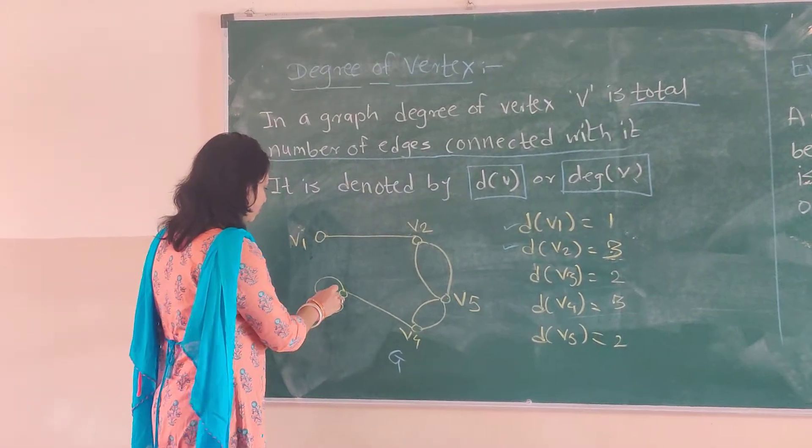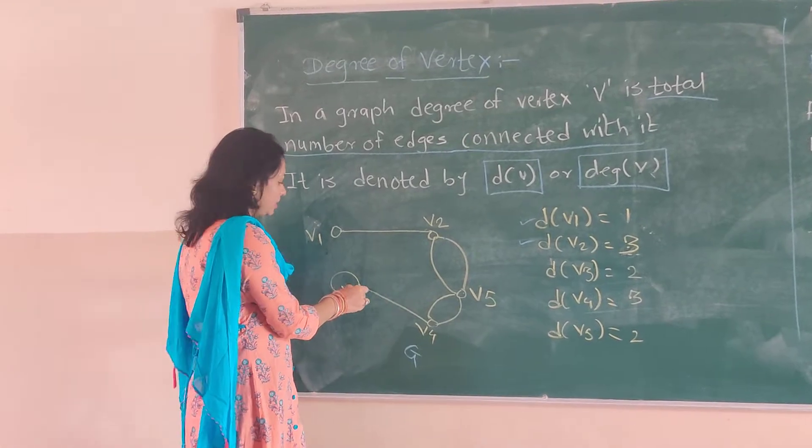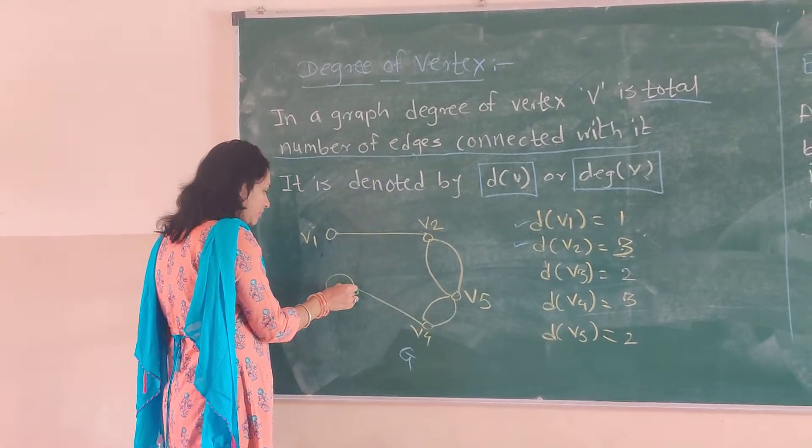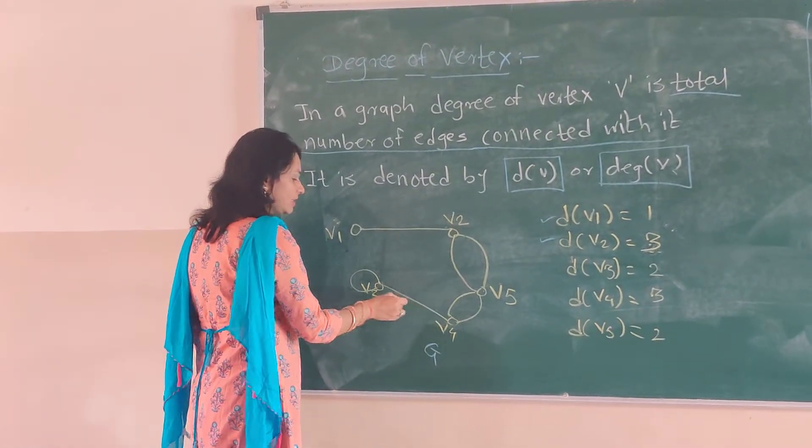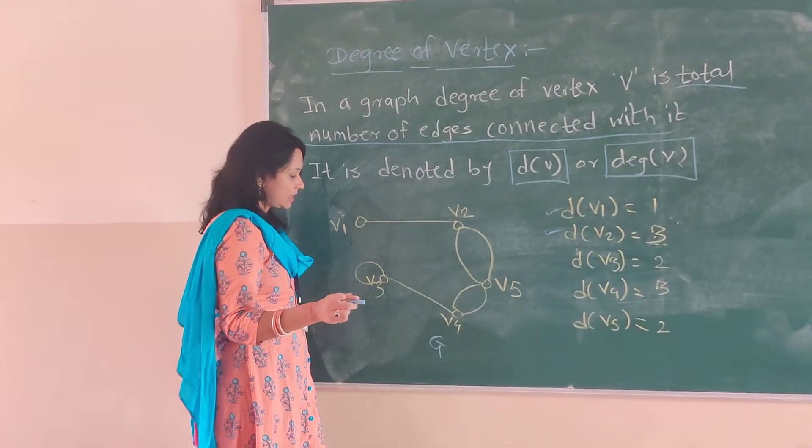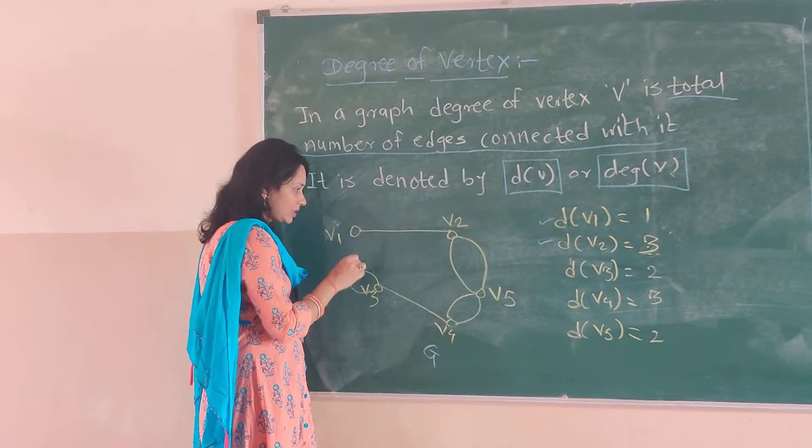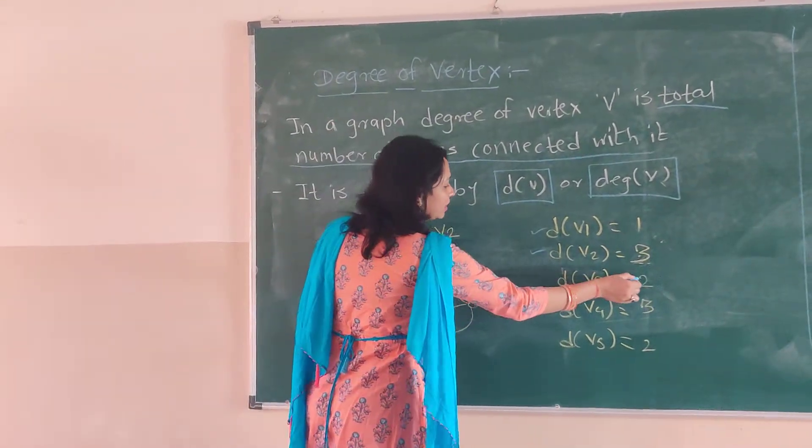Then comes V4. This is 1, 2, and 3. That's why degree of V4 is 3.